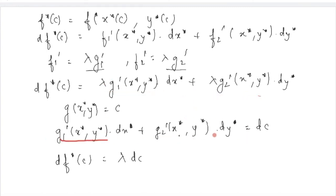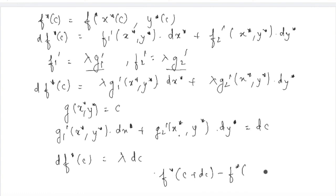So I can write that d(f*(c)) = λ · dc. This confirms that if c changes by a small amount dc, then f*(c + dc) − f*(c) is approximately equal to λ(c) · dc. Lambda tells you the rate of change, and when you multiply it by the change dc, you get the approximate increase in the optimal value function for a small change in c.